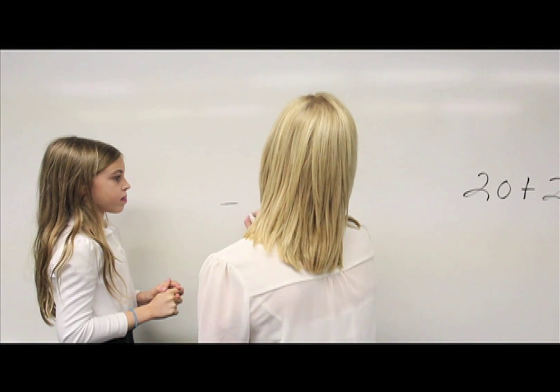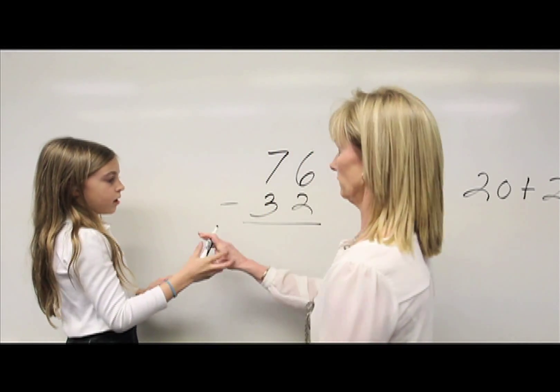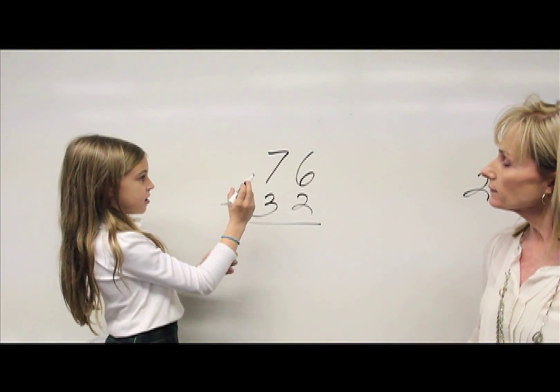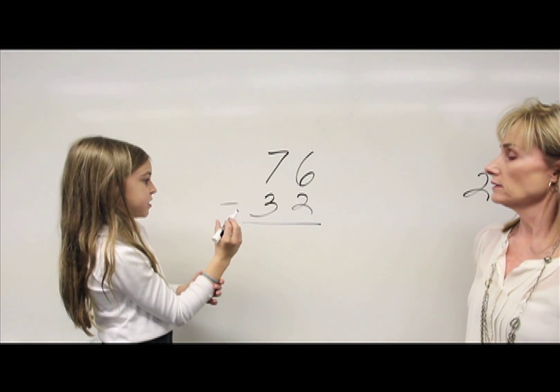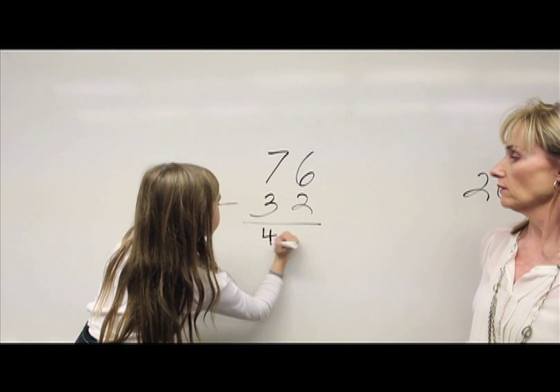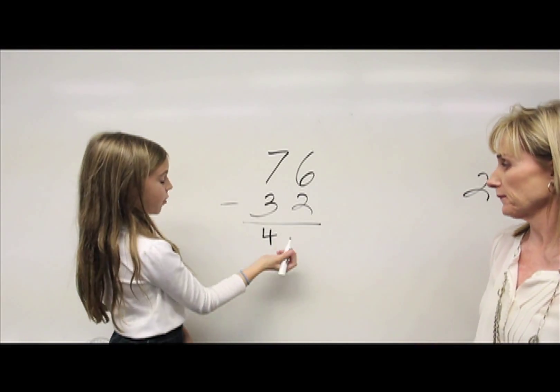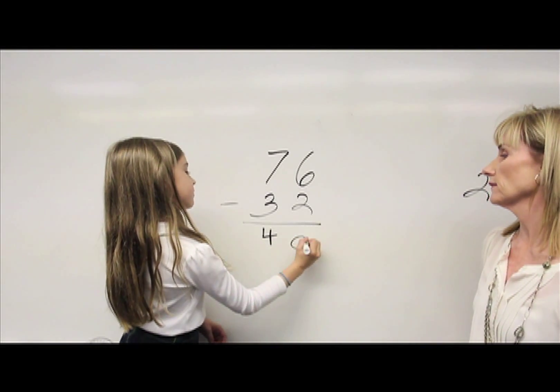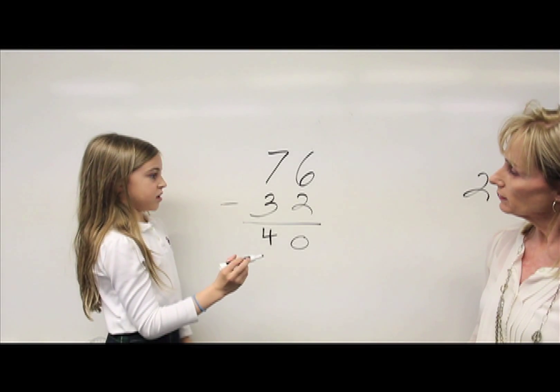I know that seven tens minus three tens equals four tens, or 40. And then I know that six ones minus two ones equals four ones.